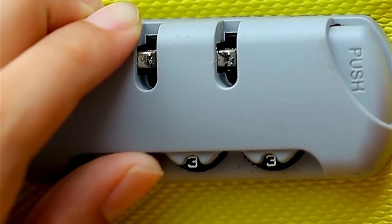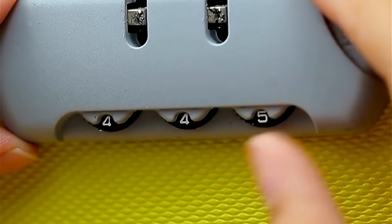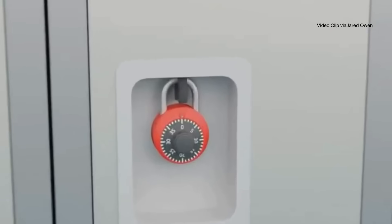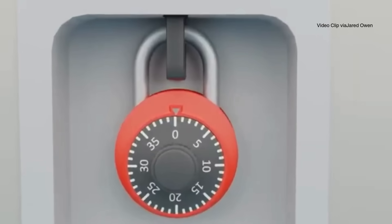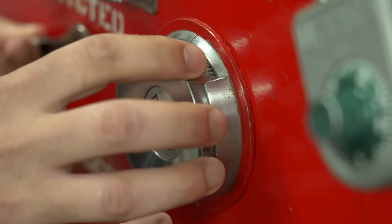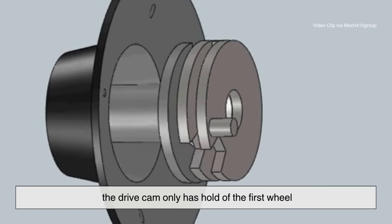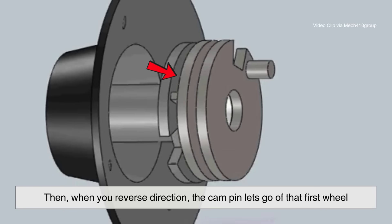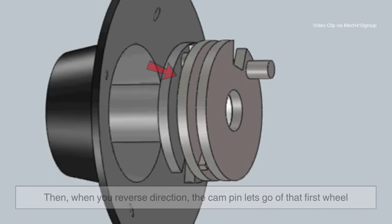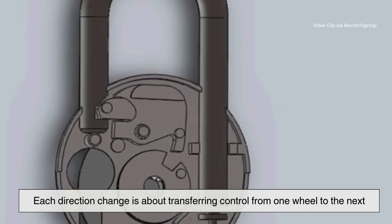One of the most common questions people have about these locks is why the opening sequence is so strict. Why can't you just spin directly to the numbers? The answer is precision. Inside, those wheels don't all move together at once. When you first spin the dial around several times, you're essentially resetting the system so the drive cam only has hold of the first wheel. Then, when you reverse direction, the cam pin lets go of that first wheel while grabbing the next one. Each direction change is about transferring control from one wheel to the next. By the time you finish, every wheel is carefully parked at its proper position.